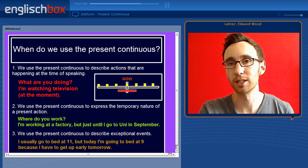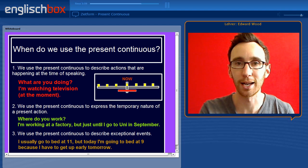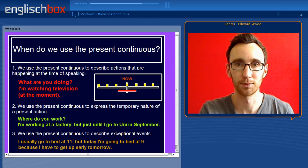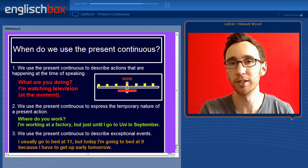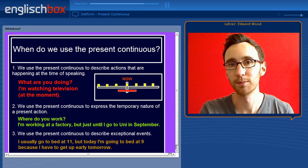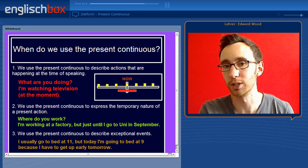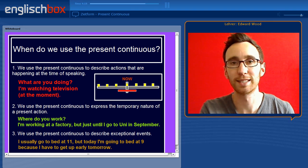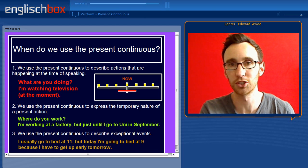We also use the present continuous to express or highlight the temporary nature of an action. So to answer the question where do you work? You could say: I am working at a factory but just until I go to uni in September. Here you express the temporary nature of this action — it is only a temporary position.